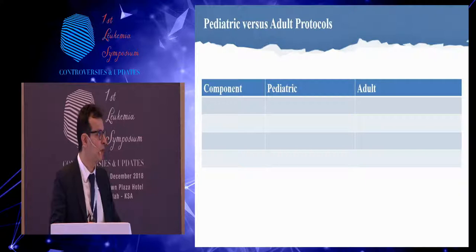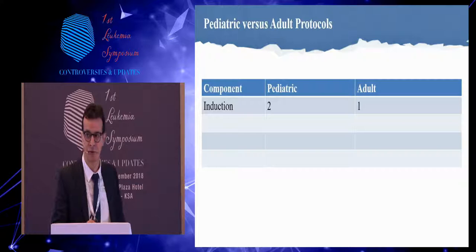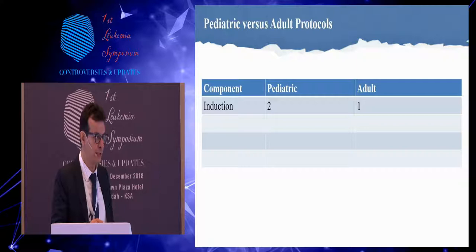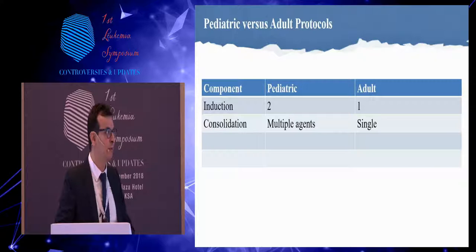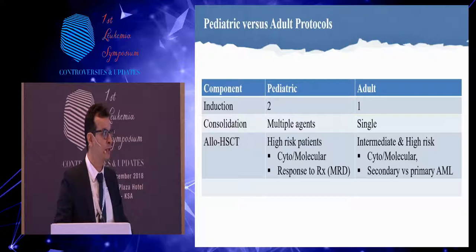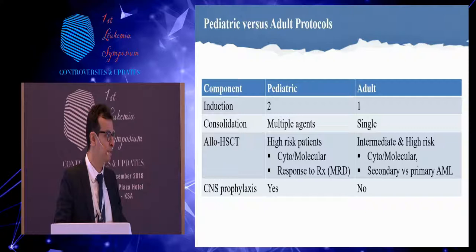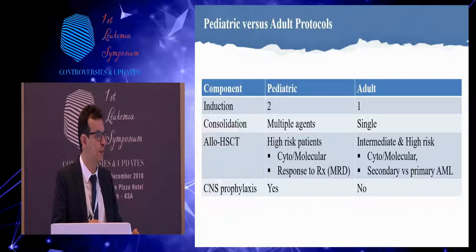Comparing adult versus pediatric protocols side by side: for induction, in children we typically use two induction cycles compared to adults who use one, plus or minus another if disease persists. For consolidation, multiple agents are used in pediatric, in contrast to a single agent in adult. Allogeneic transplantation is mainly for high-risk in pediatric, and for intermediate and high risk in adult based on cytogenetic and molecular findings. CNS prophylaxis is used in the pediatric protocol but not much in the adult ones.